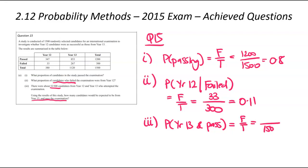That's going to be F over T. There were 1,500 people in total. Of those 1,500, there were 853 of them who were year 13 and passed. I'm looking for both of those criteria. I plug that into my graphics calculator and I'm going to get 0.5687, rounded to 4 decimal places.